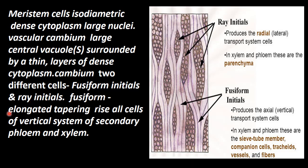In the inner type of ray initials, there are also fusiform initials. These fusiform initials are elongated and tapering. They give rise to all cells of the vertical system of the secondary phloem and xylem — secondary phloem and xylem along the longitudinal axis of the plant. In the ray initials, they produce radial lateral cells like secondary xylem ray cells — that is the transfer system of cells.